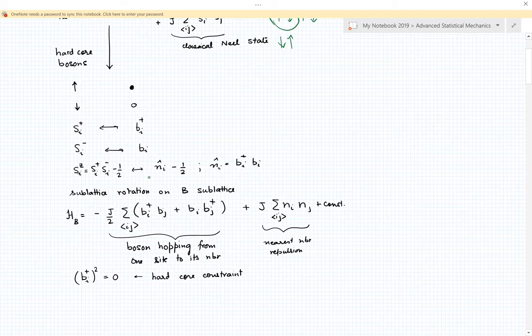Clearly when you have a boson at a site, n_i is one, one minus half is a half, so that corresponds to spin up. If it's an empty site, n_i is zero, zero minus half is minus half, so S_i^z is down.